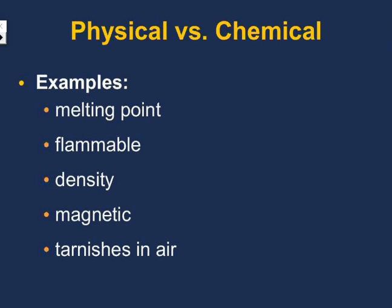Let's write down some examples. Melting point — is it changing the actual substance? I'm going to use water, good old H2O. Water in the solid form is called ice, but ultimately it's just water. Water in its liquid form we just term as water, and water in its gaseous form is water vapor. But it's still just H2O, just water. Has it become something entirely new? No. So melting point would be a physical property.